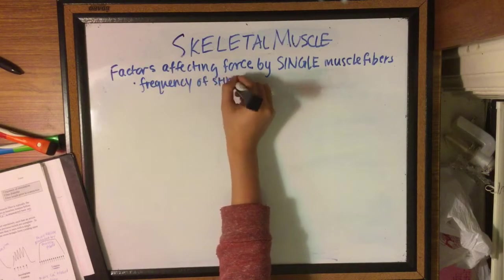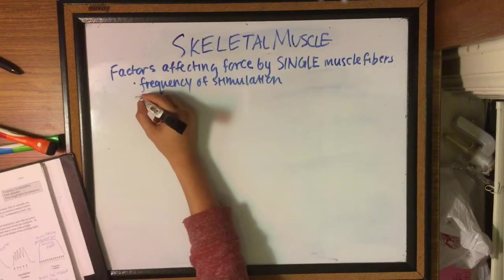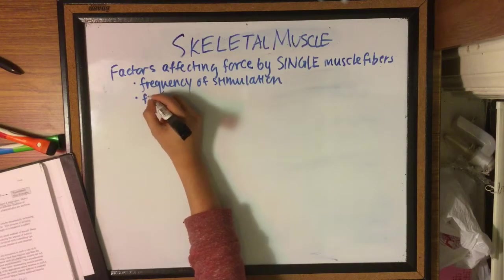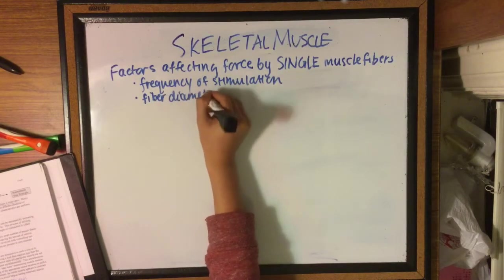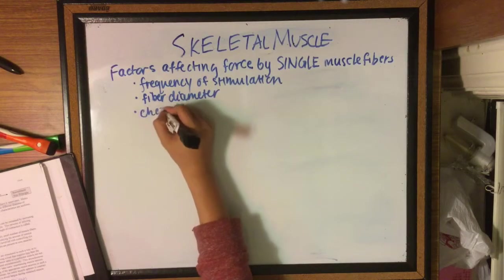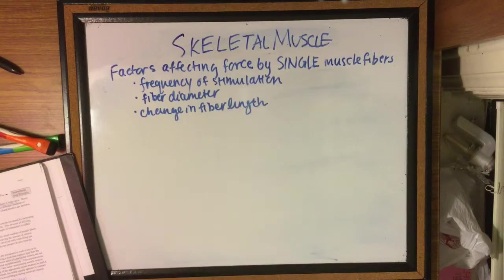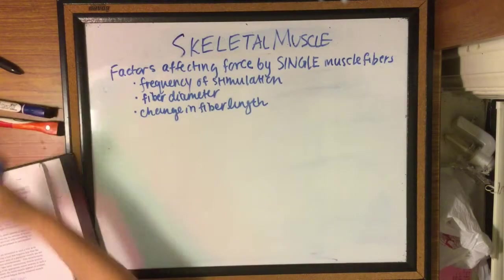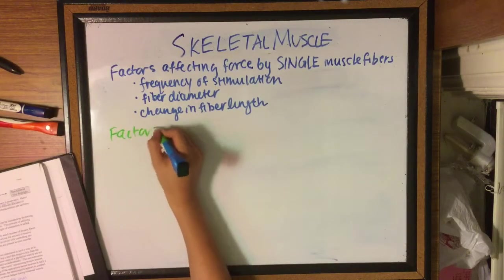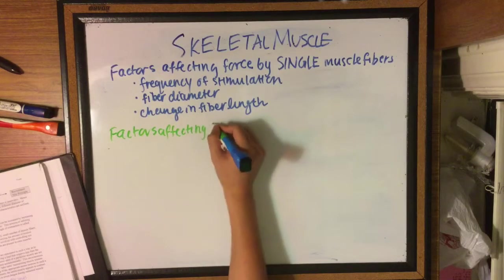Changing the fiber length can also be a factor of the single muscle. There is an optimum length in which the overlap of actin and myosin allows for maximum cross bridge formation, but if you constrict it too much then there will be steric hindrances. Also, if you stretch it too much there will be less overlap because of the distance and so less interaction can occur.